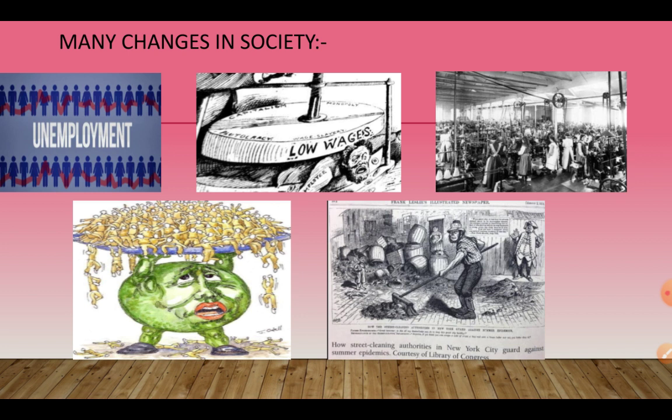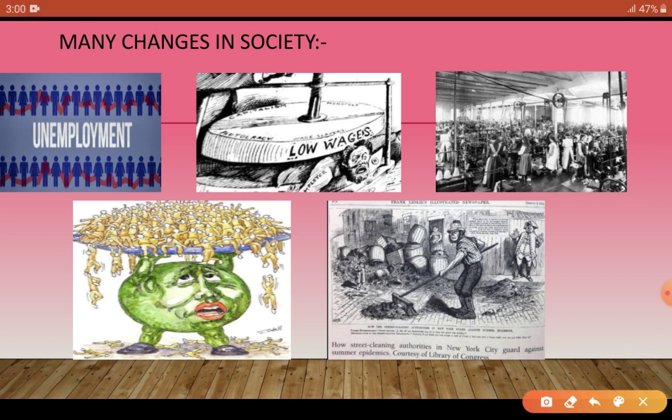Industrial revolution means new industries were being set up, new factories established, increasing production. As industrialisation arrived, new areas were developing, new cities were forming, railways were being expanded. Industrialisation brought work for men and women — people now had employment.